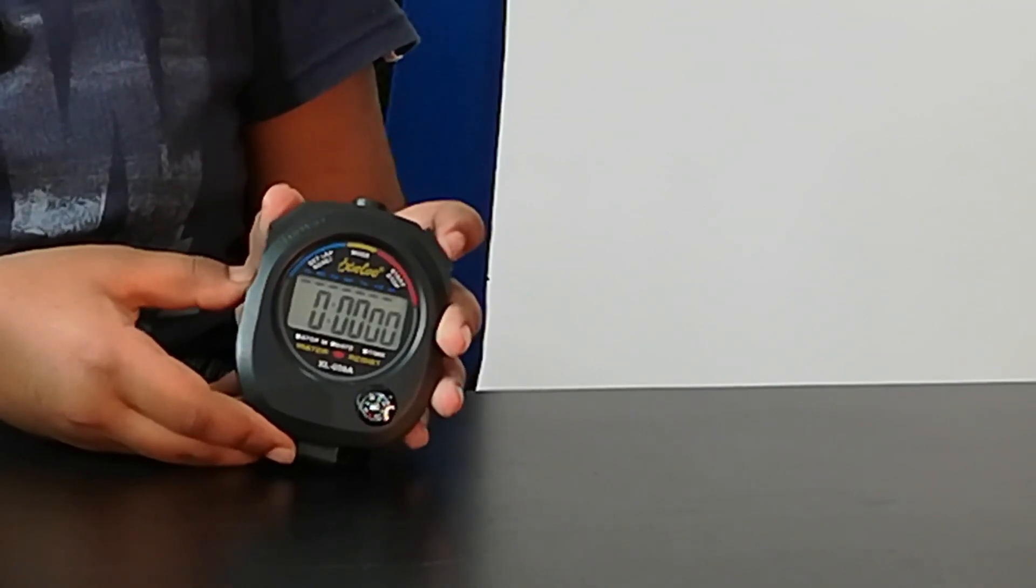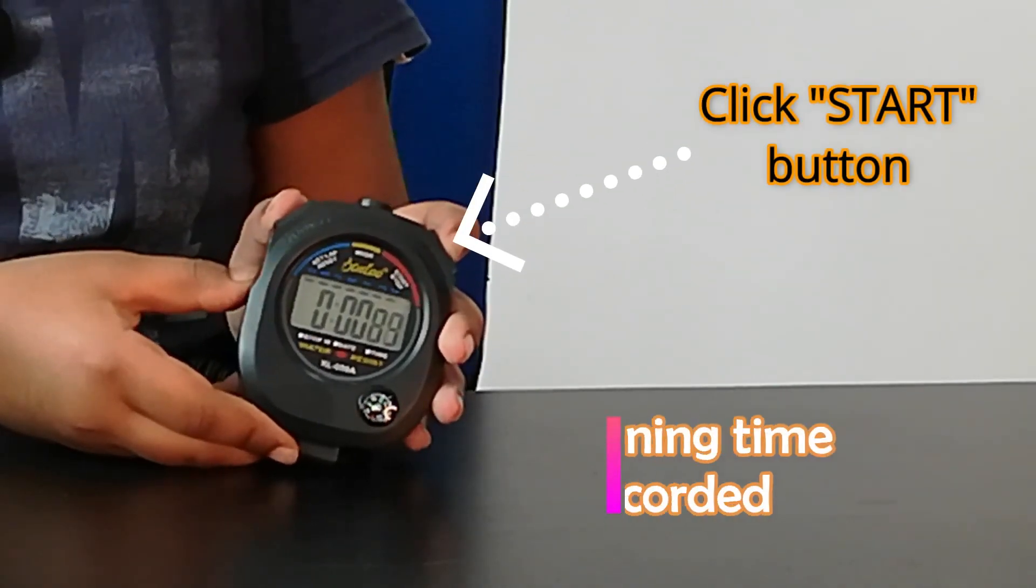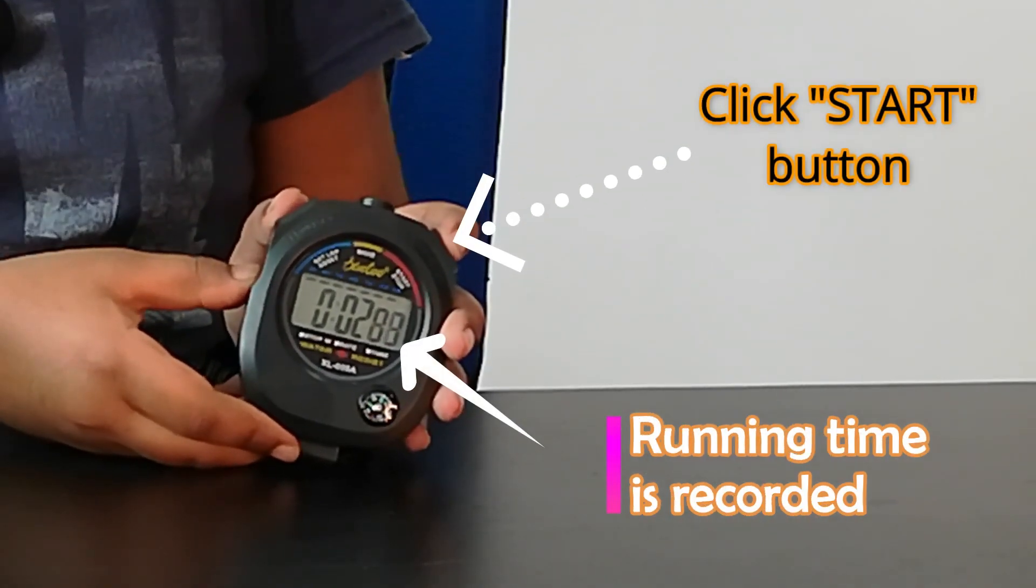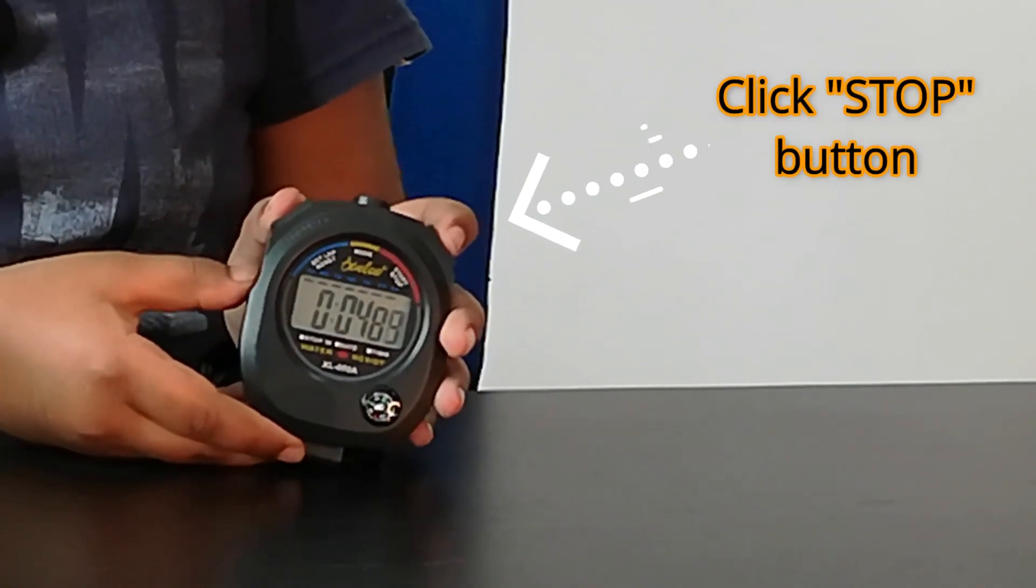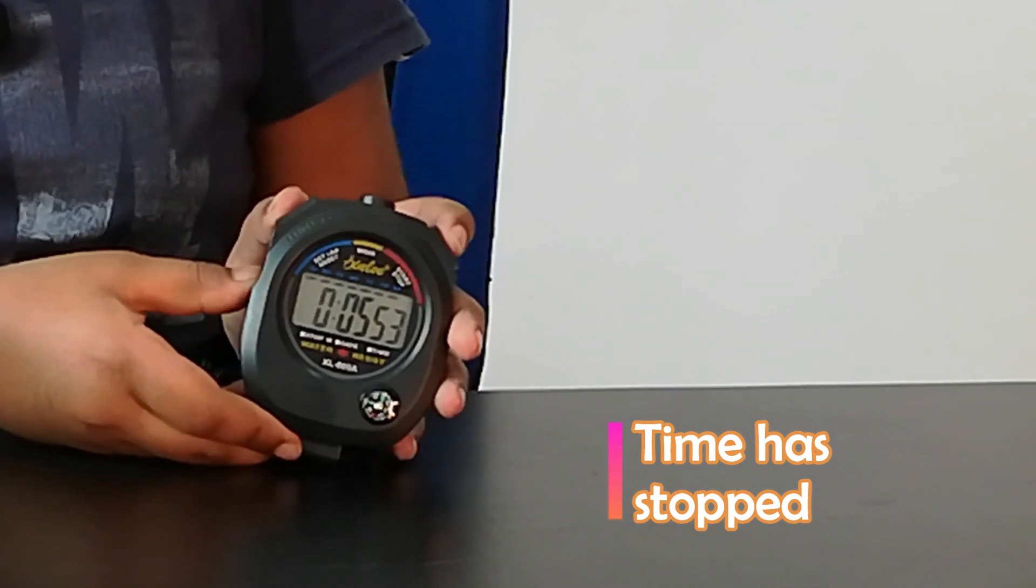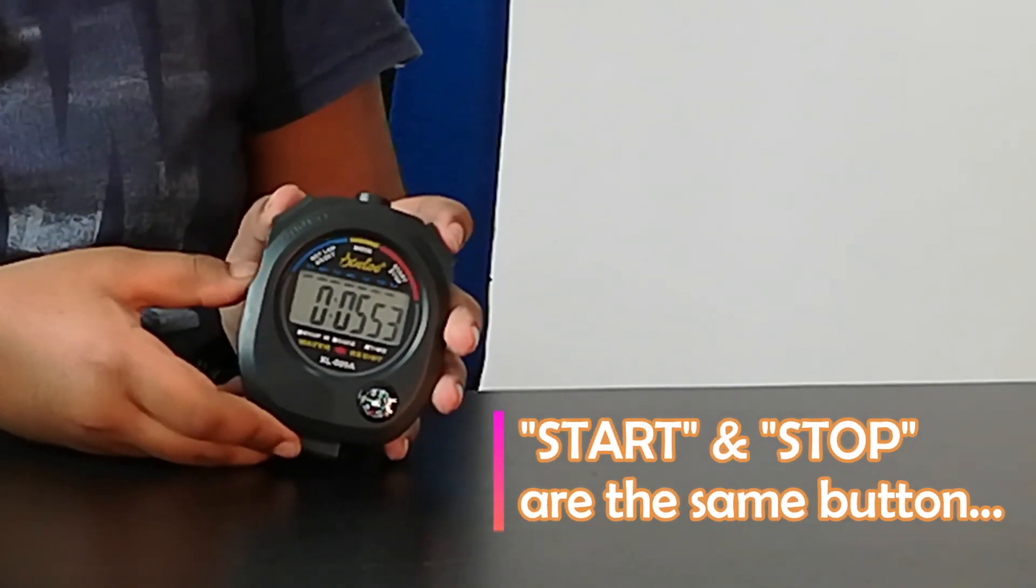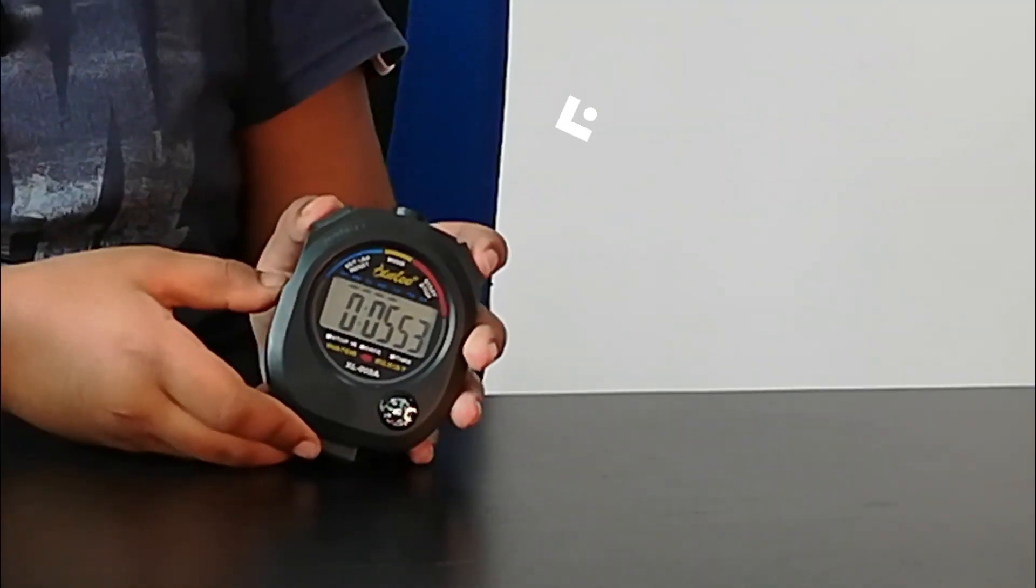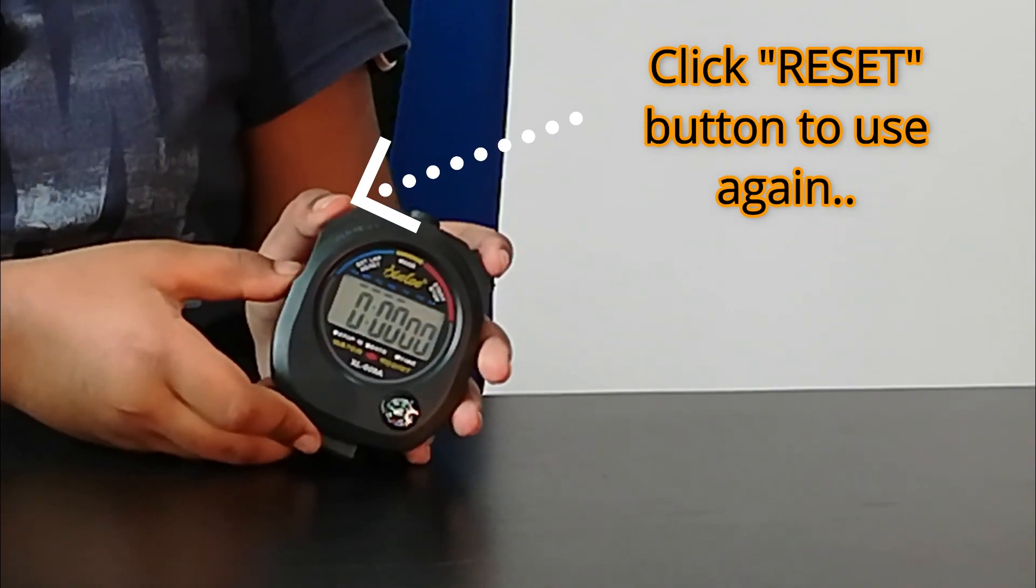To use a stopwatch, you will need to press the start button at the beginning of an event and then press the stop button to stop at the ending of an event. Usually, start and stop are the same button. To use again, you just need to press the reset button.